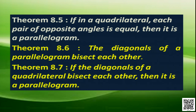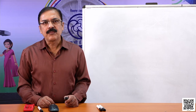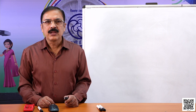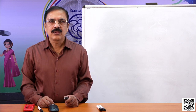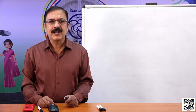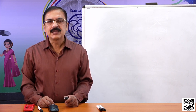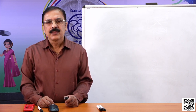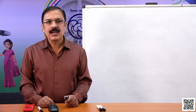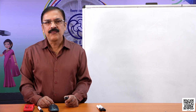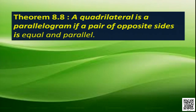Today we are going to discuss another property of a parallelogram. A quadrilateral is a parallelogram if a pair of opposite sides is equal and parallel.